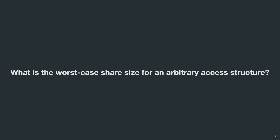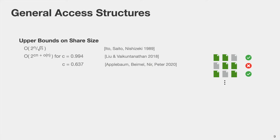One of the main questions in secret sharing research is how efficient a secret sharing scheme can be for an arbitrary access structure, where efficiency is measured in the size of the shares. For the threshold access structure, we can secret share a single bit with share size log n, and this is optimal. For general access structures, we can construct schemes with exponentially large share size, and since 2018 we know how to construct them with a constant in the exponent smaller than one — as of 2020 the constant can be as small as 0.637 — but the share size is still exponentially large.